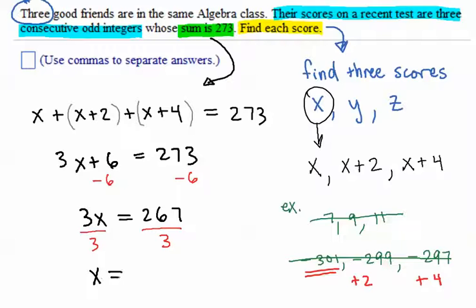So, here the result would be x equals 89. That wouldn't be the answer to the question, because the question wants to have all the answers for the three scores, each score, separated by a comma.